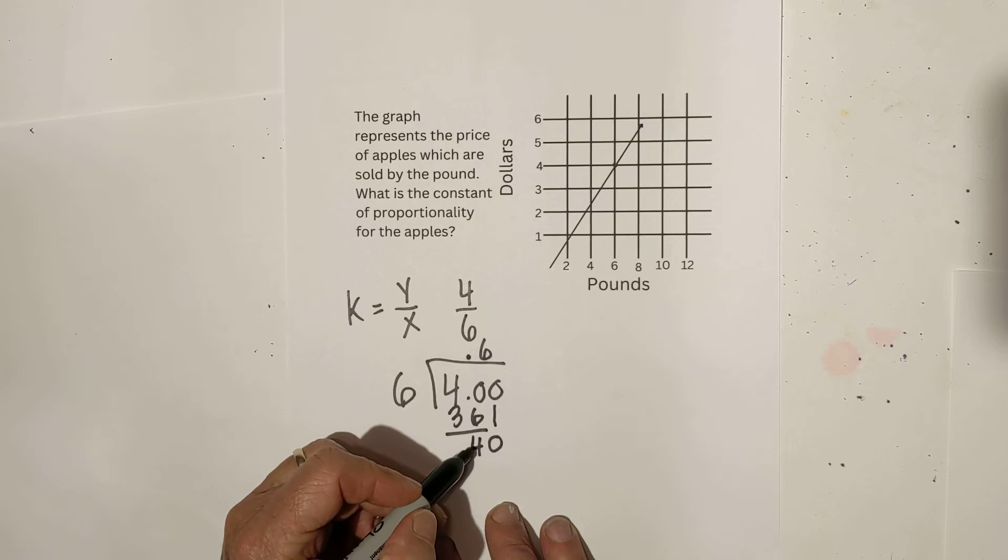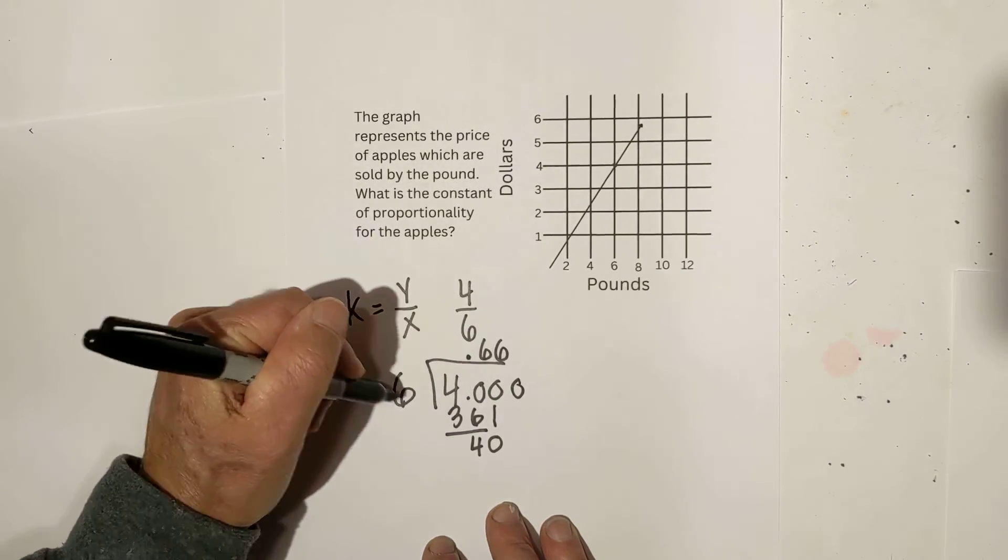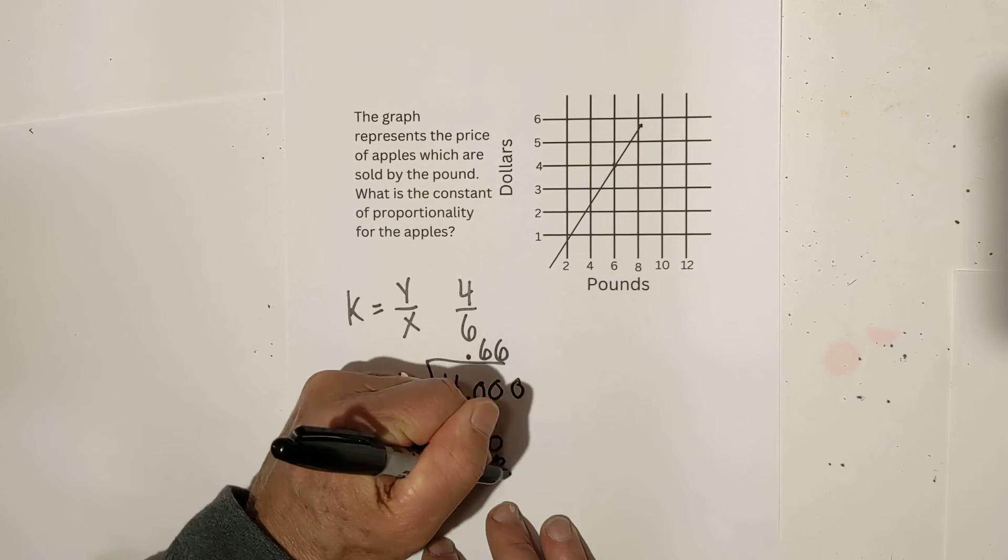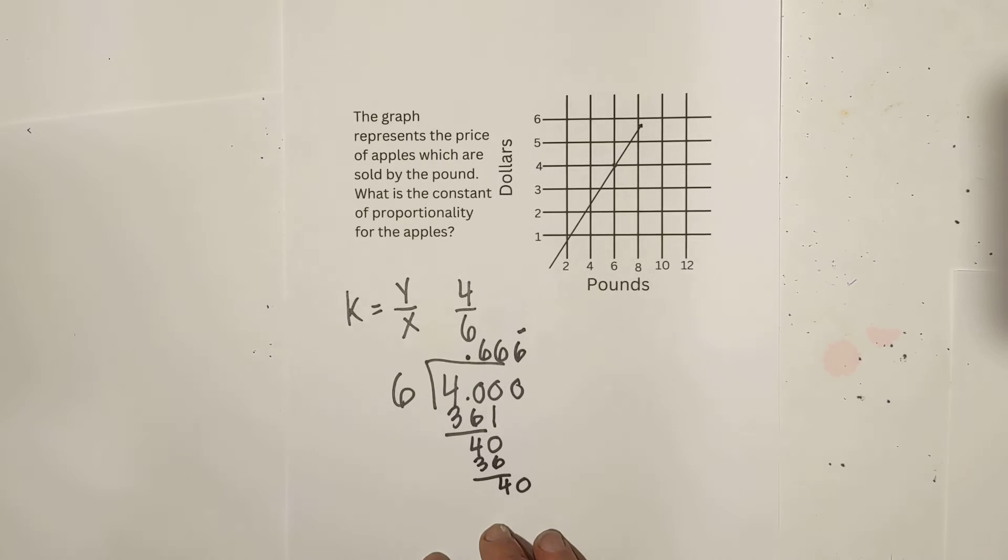6 goes into 40 once again, 6 times. Let me add a 0. 6 times 6 is 36. Subtract. And you have 40 again. So, it's going to be repeating.